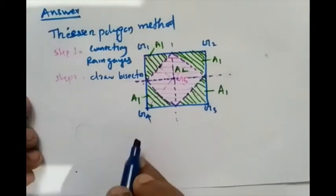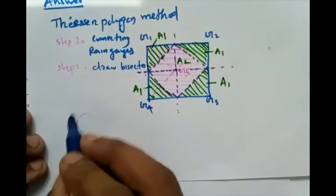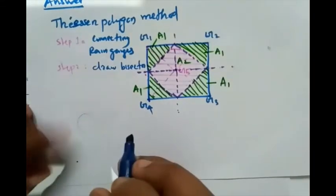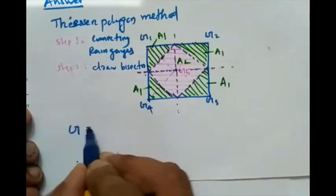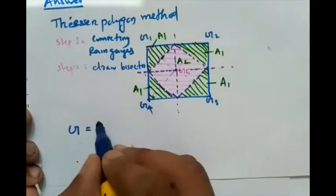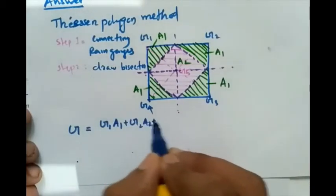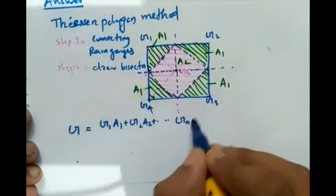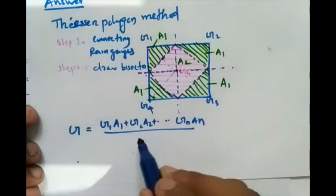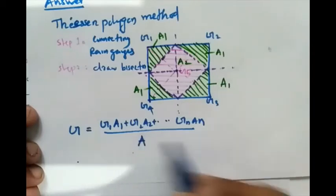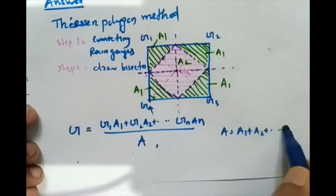The equation for average precipitation G is: G = (G1·A1 + G2·A2 + ... + Gn·An) divided by total area A, where A = A1 + A2 + ... + An.